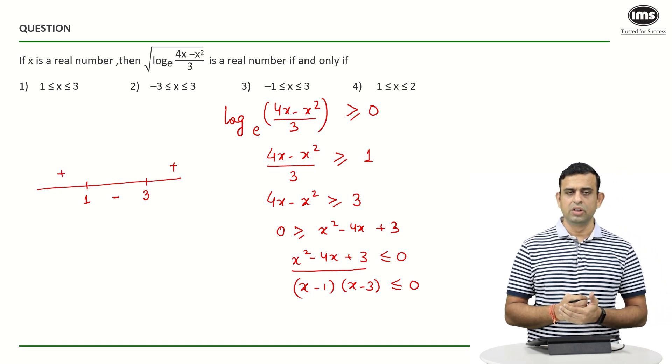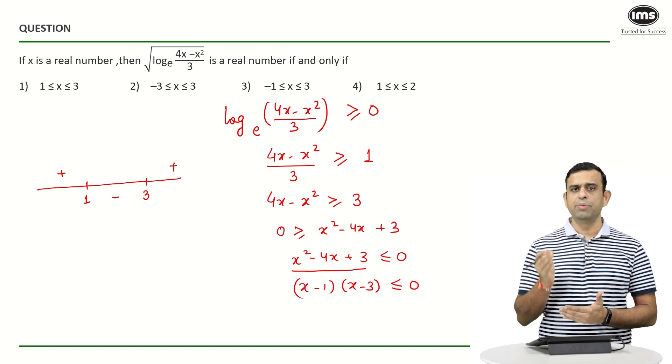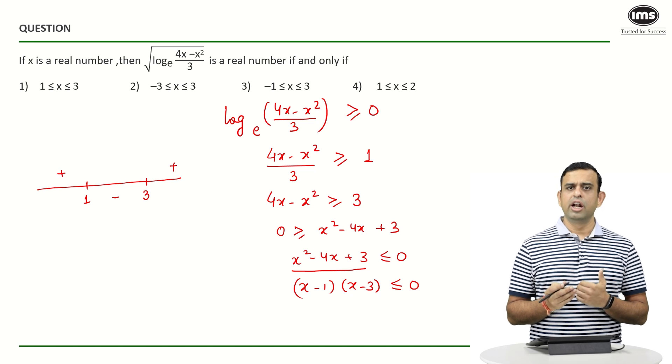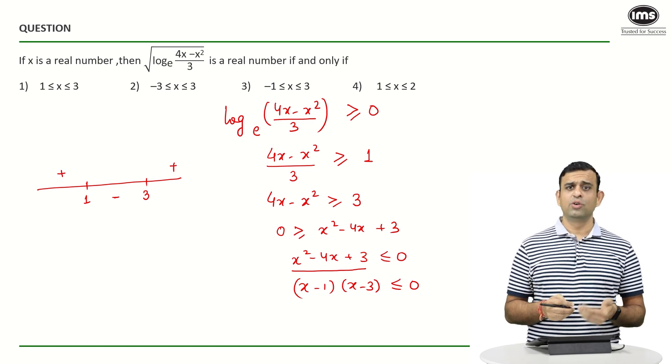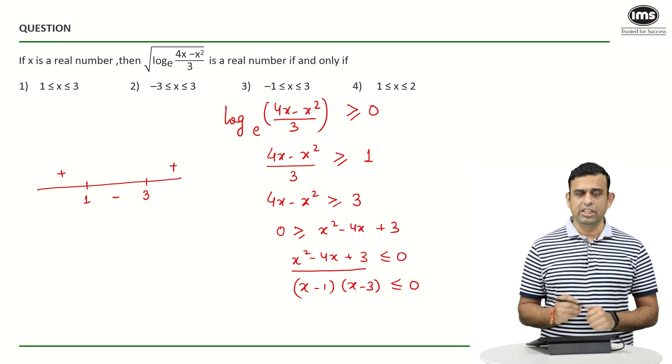We all know that for a quadratic, the graph is going to be an upward opening parabola whenever the coefficient of x² is positive. It will be a downward opening parabola whenever the coefficient of x² is negative. So here if I look at my required range...